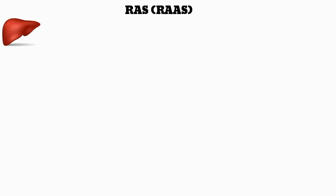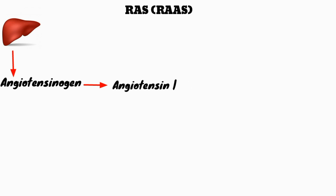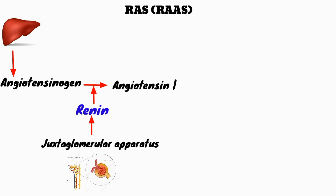In this video I am going to look at the renin-angiotensin system, or renin-angiotensin-aldosterone system. This all starts with the liver, which produces a molecule known as angiotensinogen, which is a pre-enzyme. This gets converted into angiotensin 1 through the action of renin, an enzyme released from the juxtaglomerular apparatus. The stimuli for renin secretion are: number one, low blood pressure, and number two, low blood plasma sodium level.